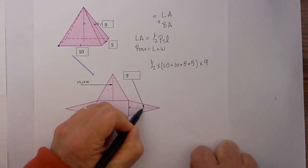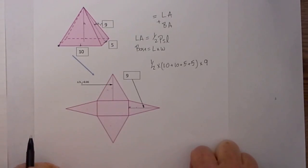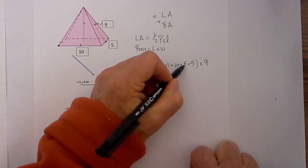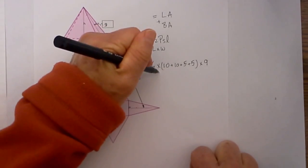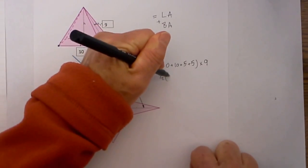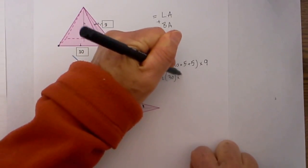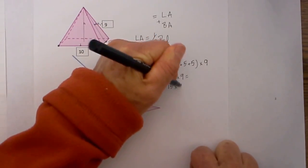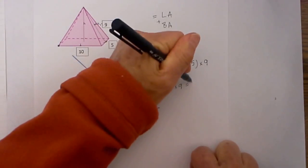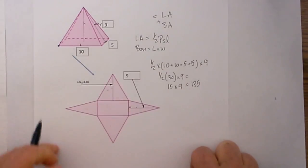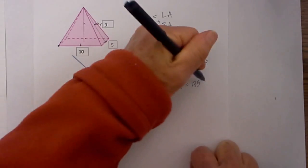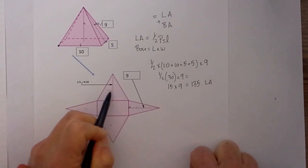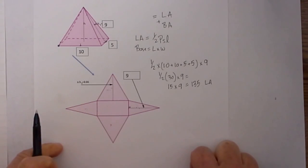The slant length is that length right there. So 10 plus 10 is 20, plus 5 plus 5 is 30, so it will be one half times 30 times 9, which equals 15 times 9, which equals 135. That gives me my lateral area, which is this area in the folded-down version.